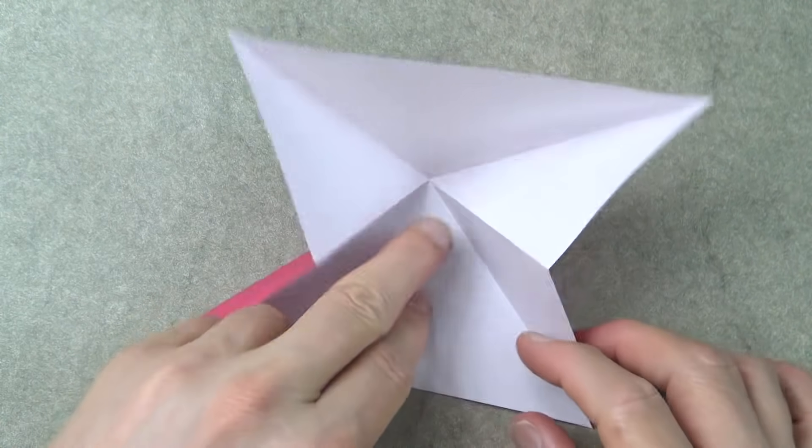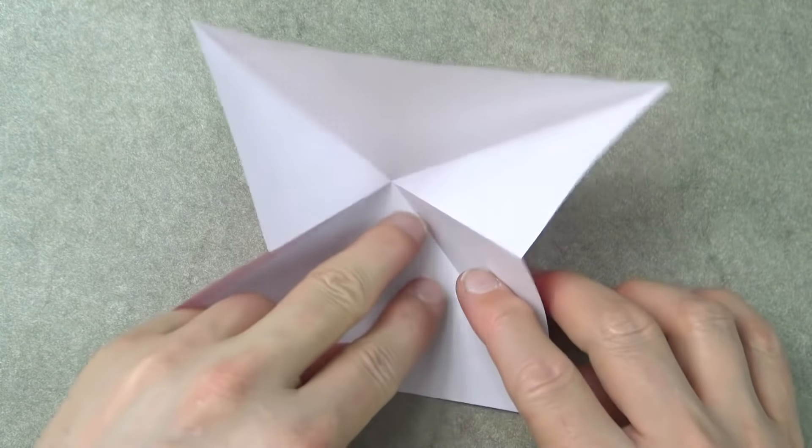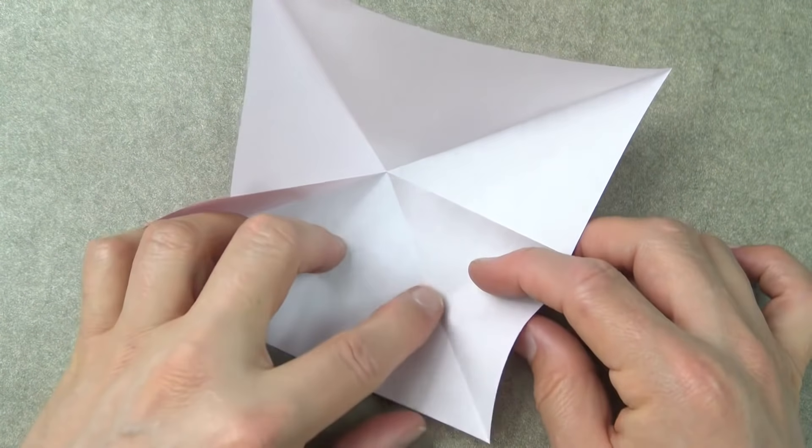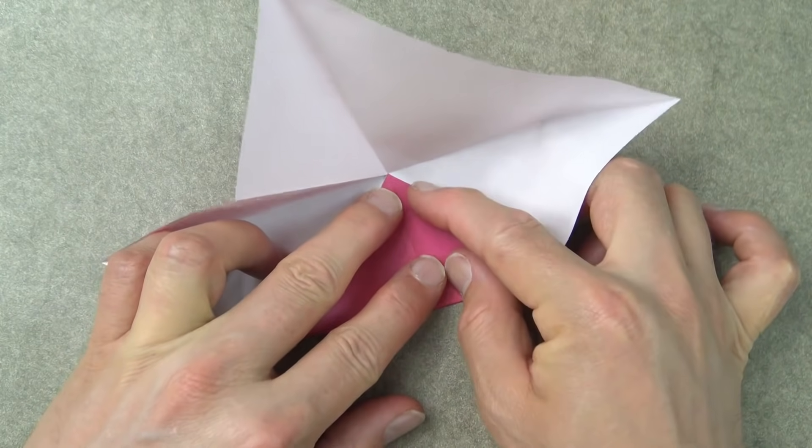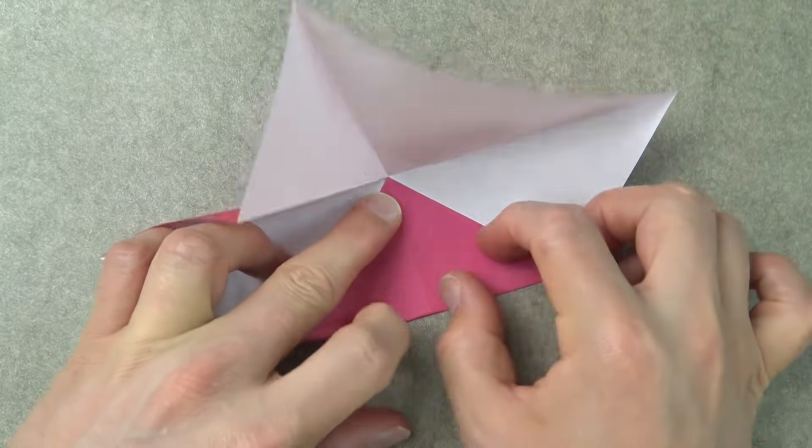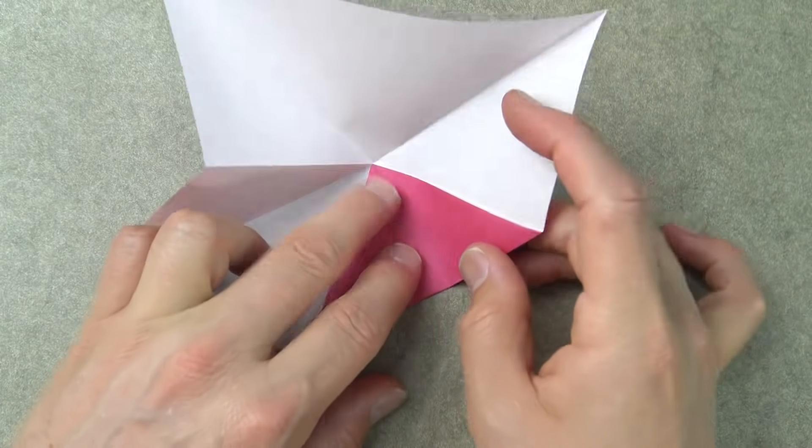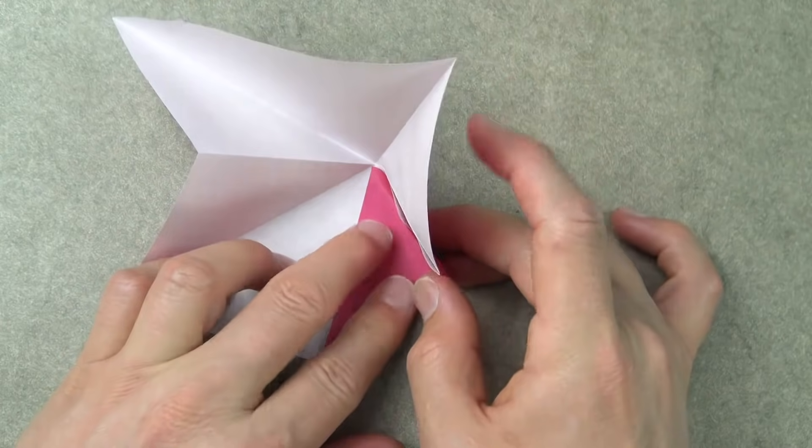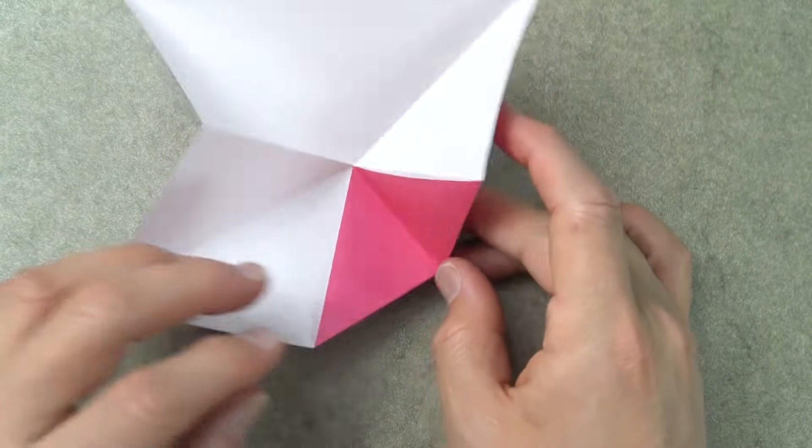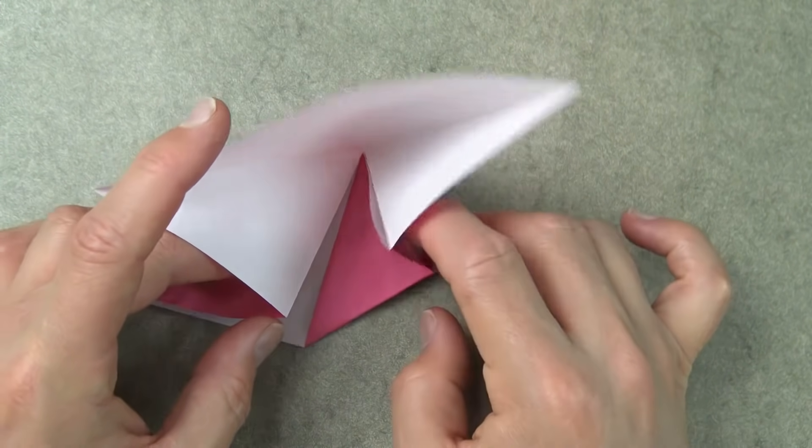Unfold, and now we're going to fold the corner to the middle and then try to remake the water bomb base. So here it goes. Corner goes to the middle. Crease on this fold and remake the water bomb base.